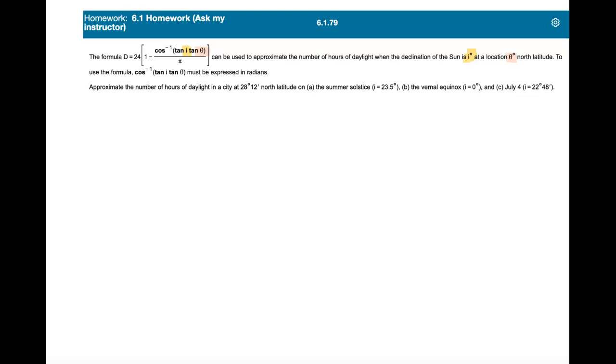And then at the end of all that, we've got to express that whole numerator of that fraction in radians. So in the problem here, we're told approximate the number of hours of daylight in a city that's located 28 degrees 12 minutes north, so it's giving you the north latitude.